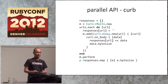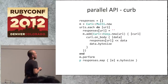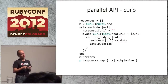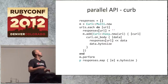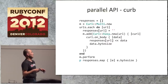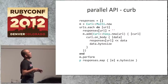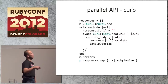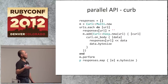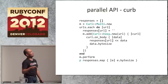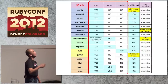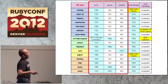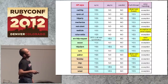The last async style is parallel API. Curb has a parallel API that issues all requests simultaneously. There's a multi object — the developer adds HTTP requests to the multi object, and all requests are issued when the perform method is invoked. So some libraries have asynchronous APIs and Curb has a parallel API.